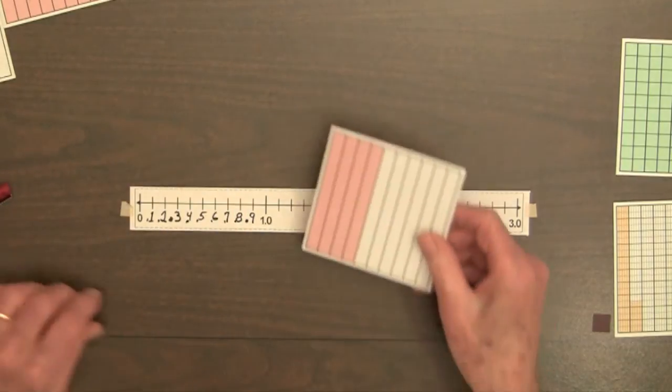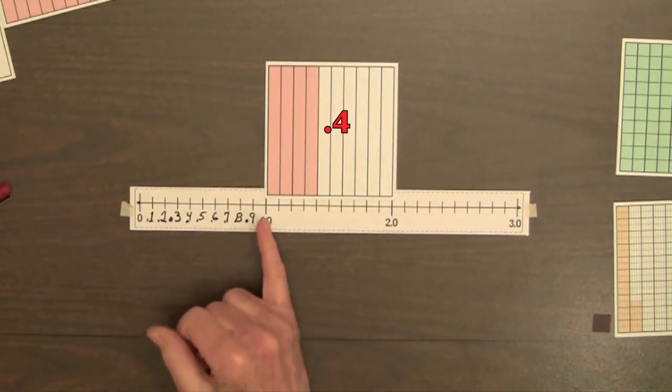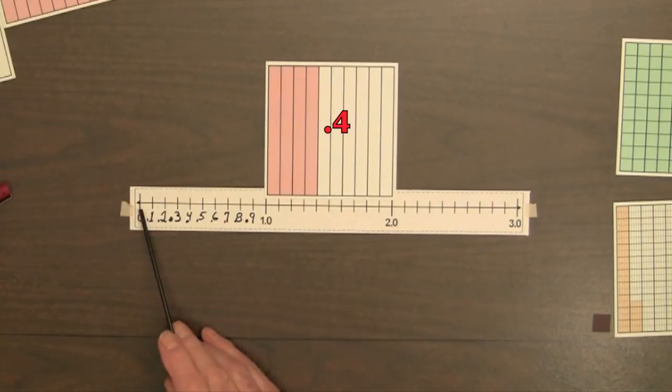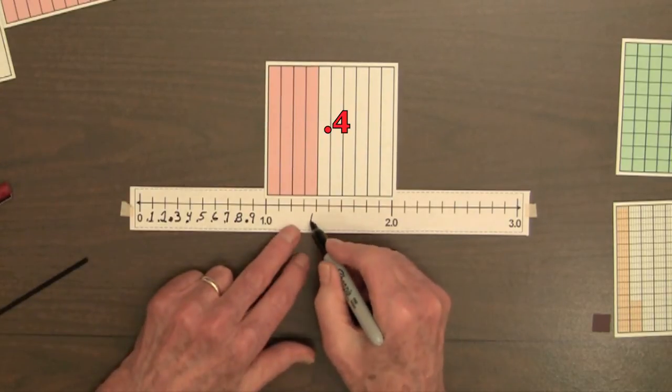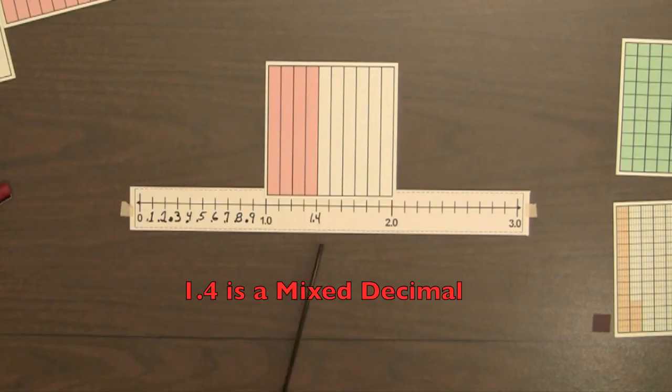Let's place the decimal square for 0.4 above the line, so the shading starts at 1.0. Since we have a length of 1 from 0 to 1.0, and now we have 4 more tenths, we can write 1.4 beneath the mark at the end of the shading for 0.4. Number 1.4 is a mixture of the whole number 1 and the decimal 0.4, so it is called a mixed decimal.